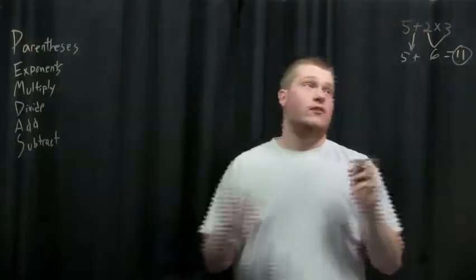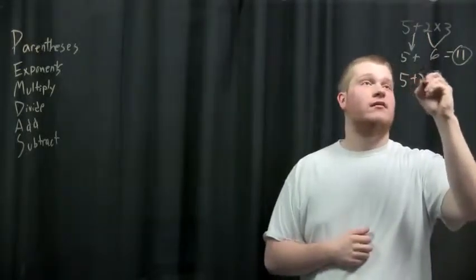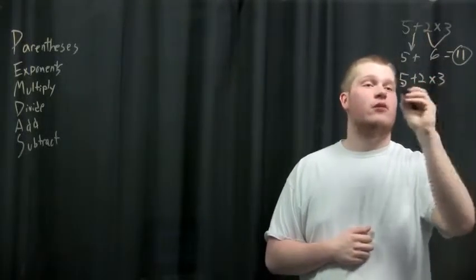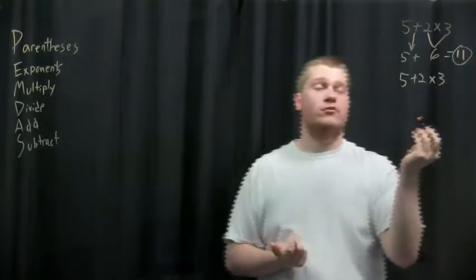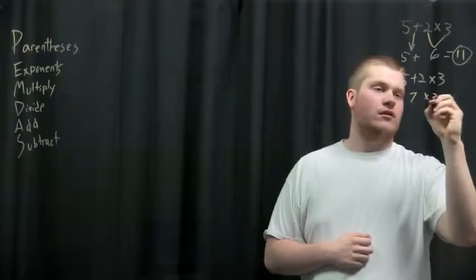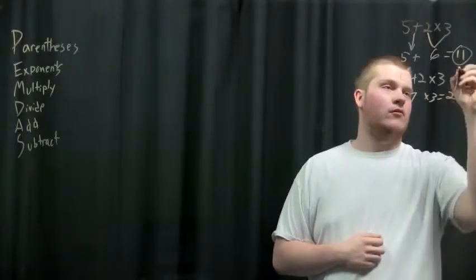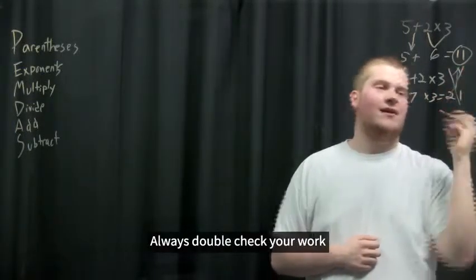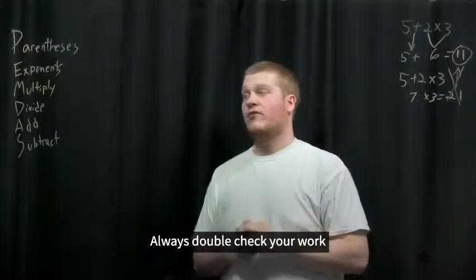Now if you did it incorrectly, you would have had something that looked like this, the same problem. You would have gone left to right as most people do when they do math, and you would have done 5 + 2 equals 7, and 7 × 3 equals 21, which is not the same as 11.